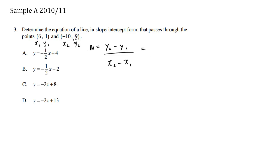So the slope equals y2 which is 9 minus y1 which is 1 over x2 which is negative 10 minus x1 which is 6. So the slope here is 8 over negative 16 which is negative 1 half.